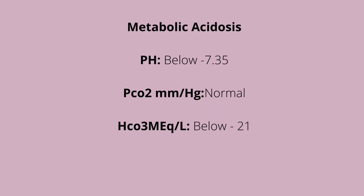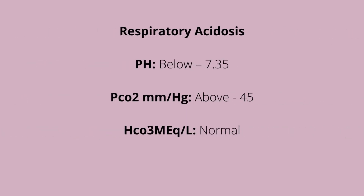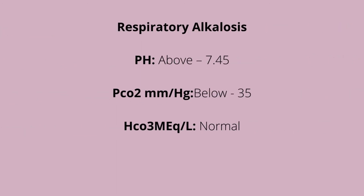Metabolic acidosis: pH is below 7.35, PCO2 is normal, and bicarb is below 22. Metabolic alkalosis: pH is above 7.45, PCO2 is normal, and bicarb is elevated. Respiratory acidosis: pH is below 7.35, PCO2 is above 45, and bicarb is normal. Respiratory alkalosis: pH is above 7.45, PCO2 is below 35, and bicarb is normal.